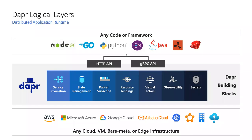Logically, DAPR at runtime exposes HTTP and gRPC APIs that give you access to the most common usage patterns seen in distributed applications, generalized into something consistent for developers yet flexible underneath so you can plug in specific implementations. We refer to these as building blocks. When combined, they create an open programming model — you start small today, then move between environments and apply changes through configuration without rebuilding your application.